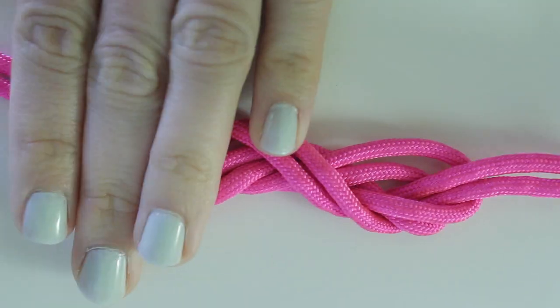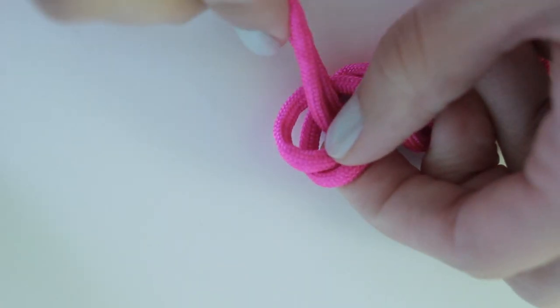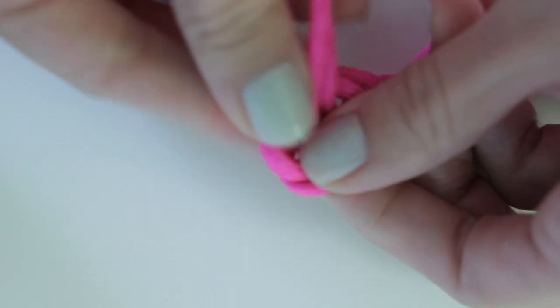Then you're going to take one of the ends and place it through one of the loops. You want to make sure it's going from the bottom through to the top of the necklace.